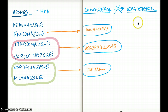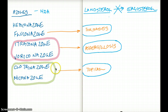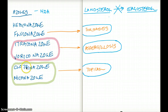Let's talk about the different azoles that we have. The different azoles that are commonly used are ketoconazole, fluconazole, itraconazole, voriconazole, clotrimazole, and miconazole.